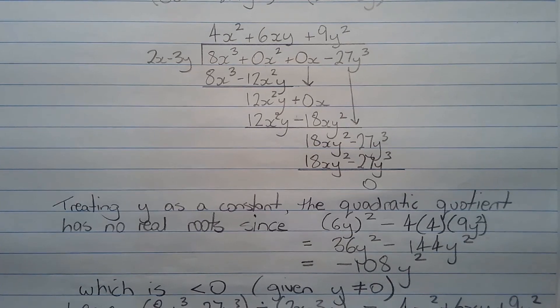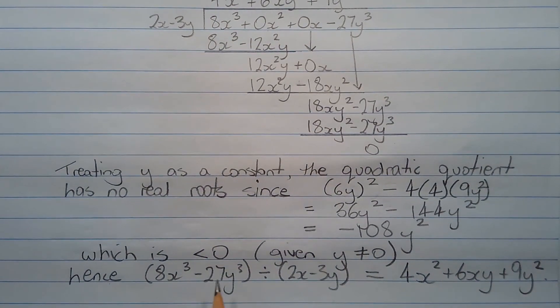Hence, 8x cubed minus 27y cubed divided by 2x minus 3y is equal to 4x squared plus 6xy plus 9y squared.